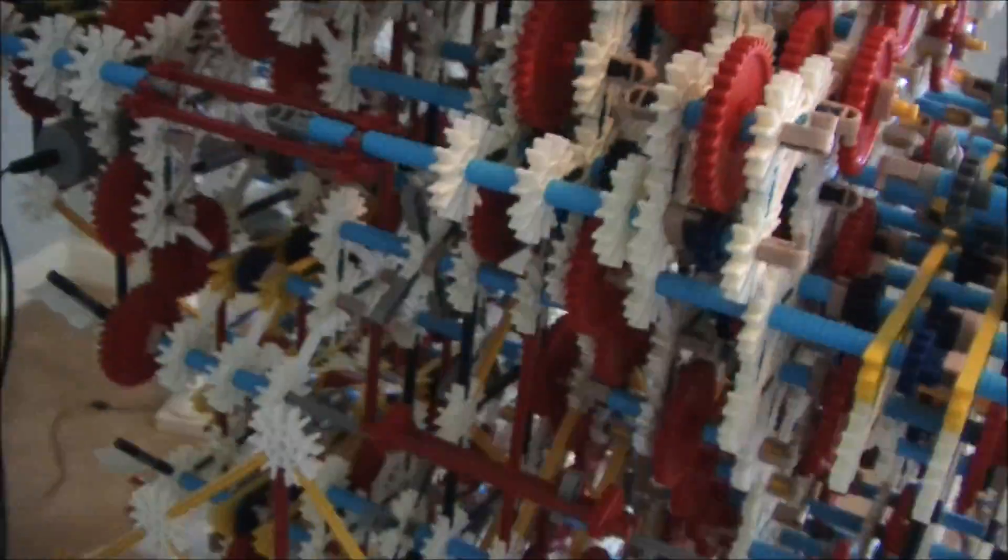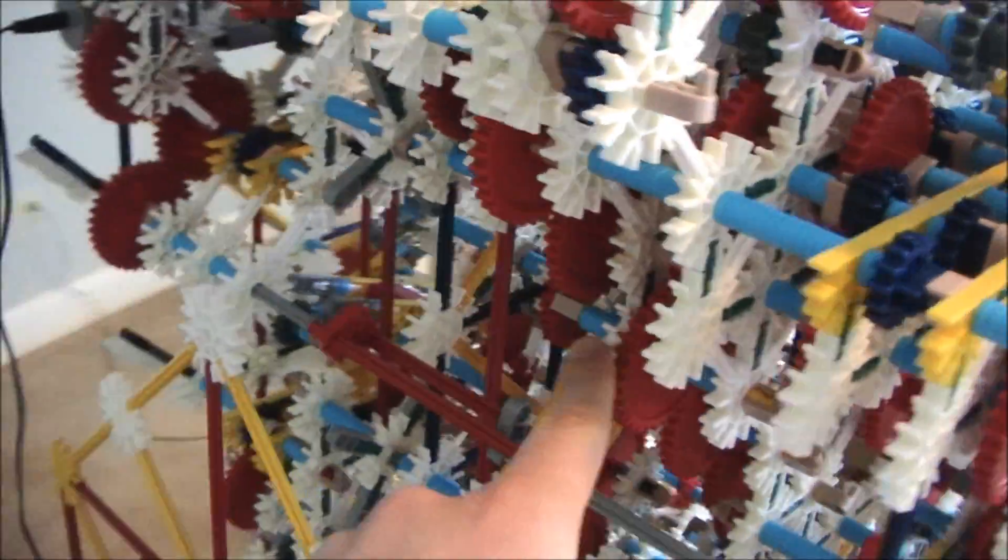I just know from building this which ones mean what. For instance, the carry out bit is actually this gear turning right here. This gear is going to come out of this full adder and it's going to link up to the next full adder to the left of it.